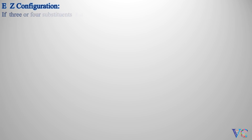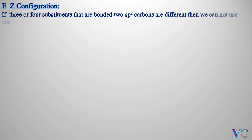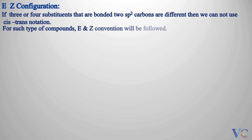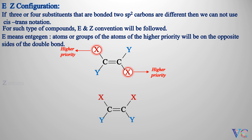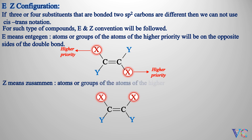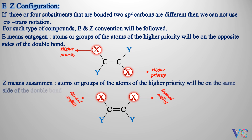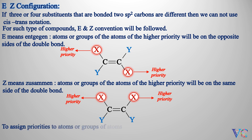E/Z configuration: if 3 or 4 substituents bonded to the two sp2 carbons are different, then we cannot use cis-trans notation. For such compounds, E and Z convention will be followed. E means that atoms or groups of atoms of higher priority will be on the opposite sides of the double bond. Z means that atoms or groups of atoms of higher priority will be on the same side of the double bond. To assign priorities to atoms or groups of atoms, the rules of Cahn, Ingold, and Prelog system should be followed.